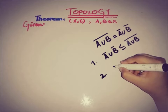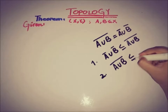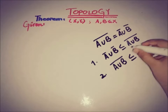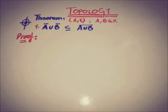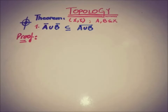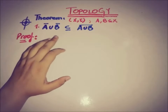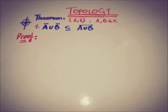The second part is that A union B closure is a subset of A closure union B closure. We will see the very first part right now. For the first part the target is: A closure union B closure is a subset of A union B closure.